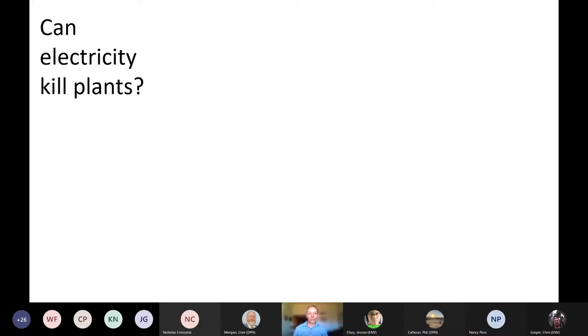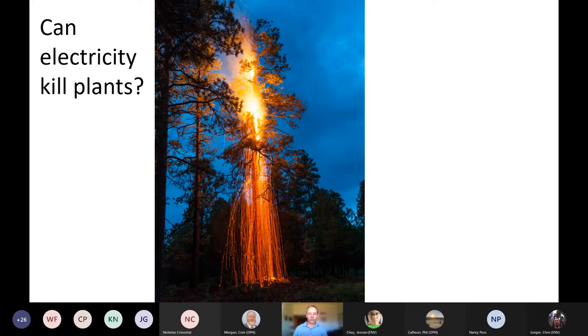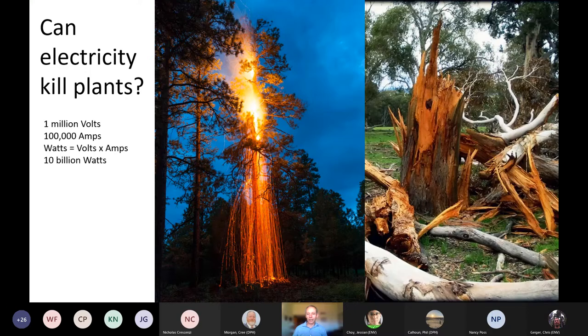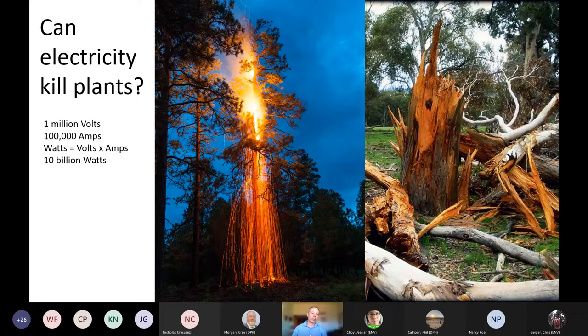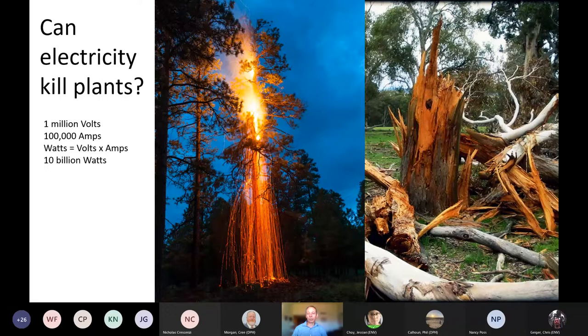Okay, here's the question that has an obvious answer. Can electricity kill plants? You've probably all seen trees that were struck by electricity, and maybe have seen the aftermath of that. So yeah, certainly electricity can kill plants. With lightning, we're talking about something like a million volts and 100,000 amps, which equals around 10 billion watts of power. So that's an incredible force delivered very, very rapidly. And it has some drastic effects on plants.